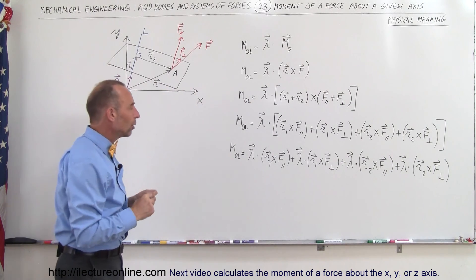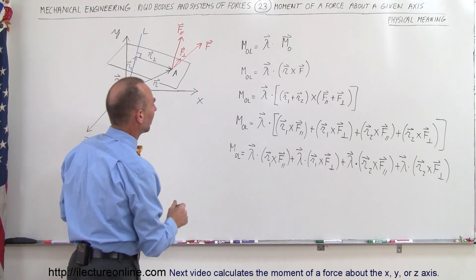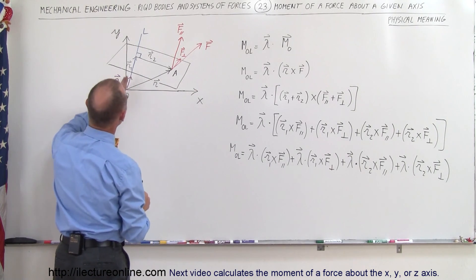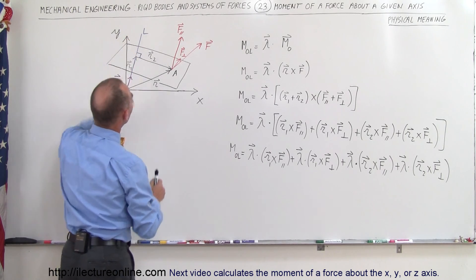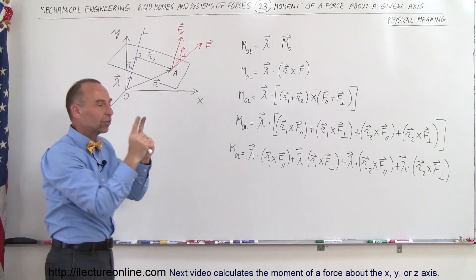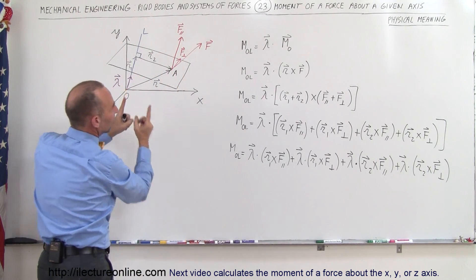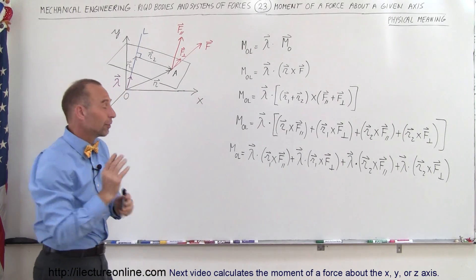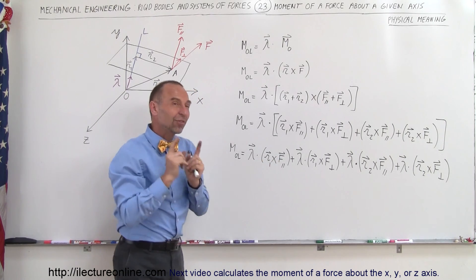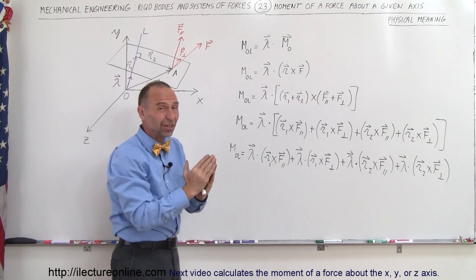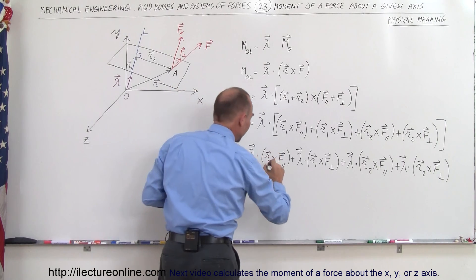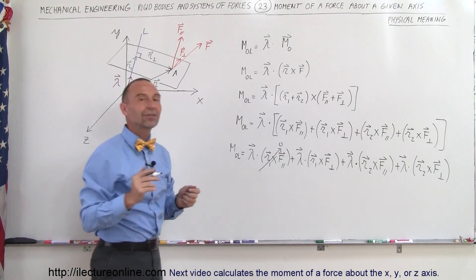First, let's look at R1 cross F_parallel. R1 runs parallel to OL, and F_parallel is the component of force also parallel to OL. Since both vectors are parallel, the magnitude of their cross product is |R1| |F_parallel| sin(θ), but the angle between them is zero, and sin(0) = 0, so this term cancels out and is non-contributory.